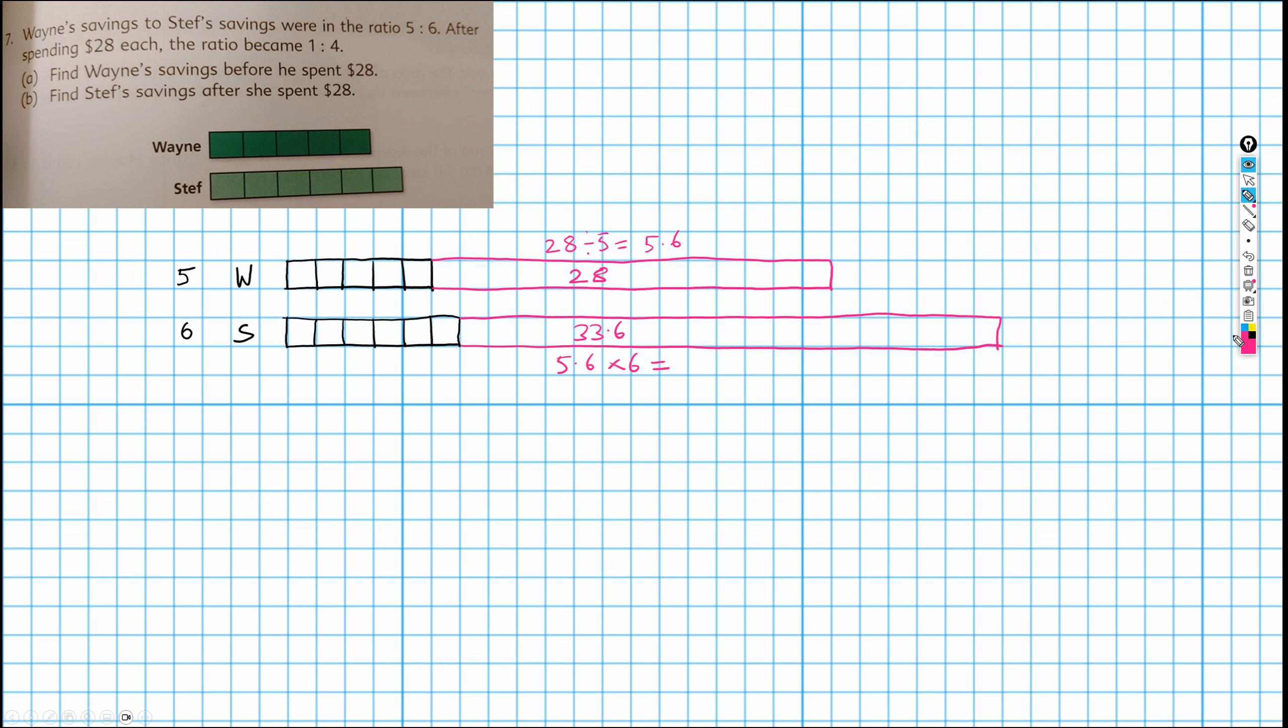Right, so what then happens? We're going to draw again. We know that Wayne, what is Wayne left with? Well, Wayne is left with these 5 parts, because he spends all of this $28. So this is what Wayne is left with. So I'm going to draw a bar for Steph as well. And this is the end situation. So this is the start, and this is the end. We go from 5 to 6 to 1 to 4.